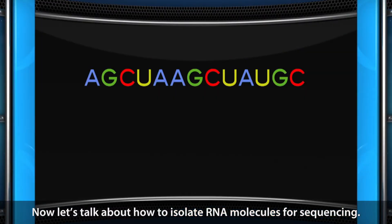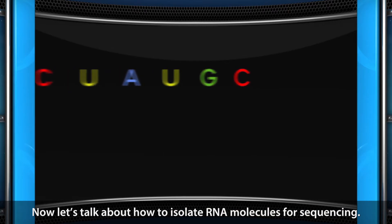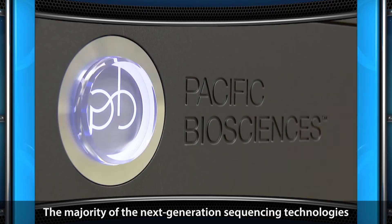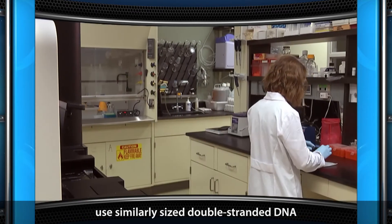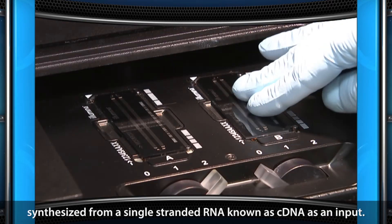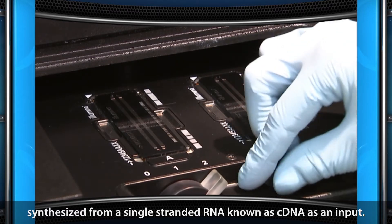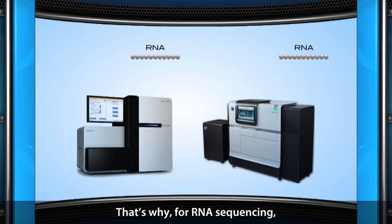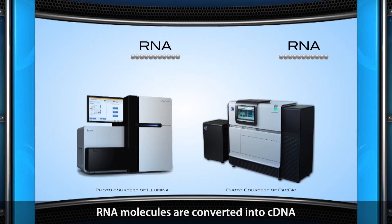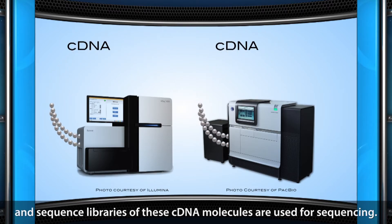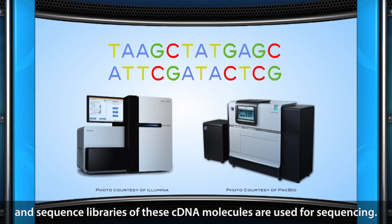Now, let's talk about how to isolate RNA molecules for sequencing. The majority of next-generation sequencing technologies use similarly sized double-stranded DNA synthesized from a single-stranded RNA, known as cDNA, as an input. That's why, for RNA sequencing, RNA molecules are converted into cDNA and sequence libraries of these cDNA molecules are used for sequencing.